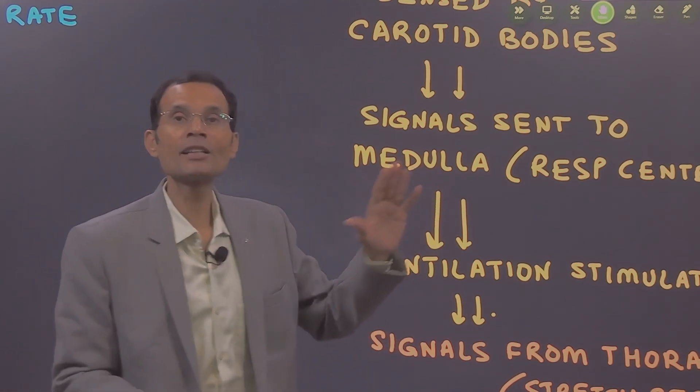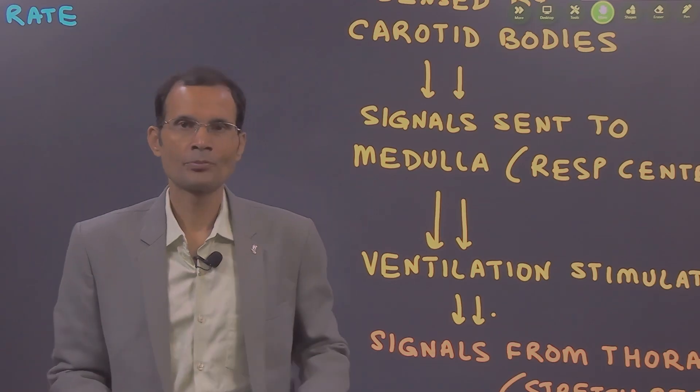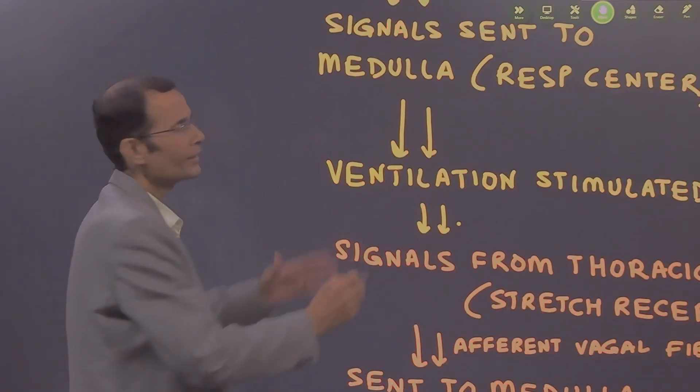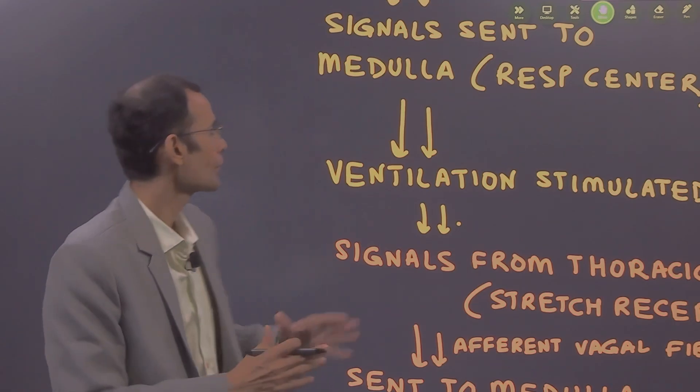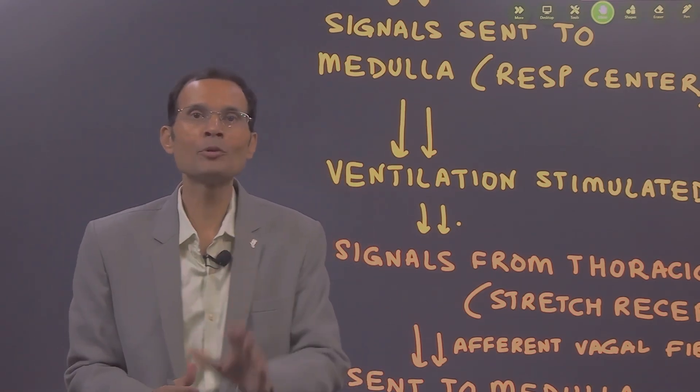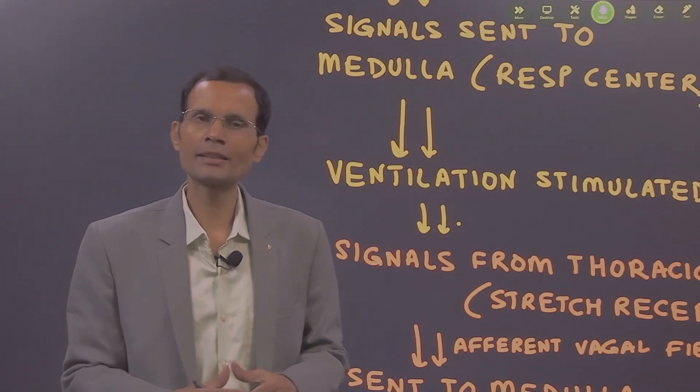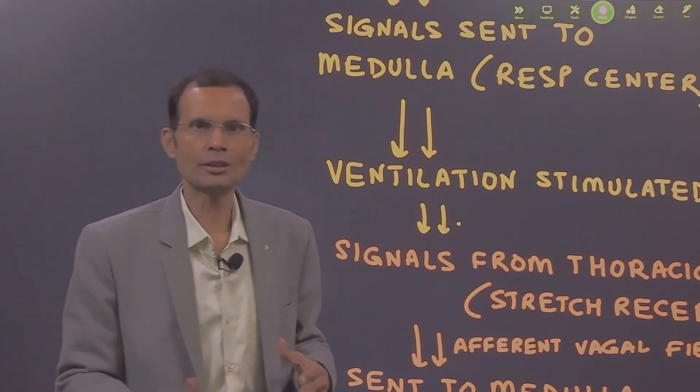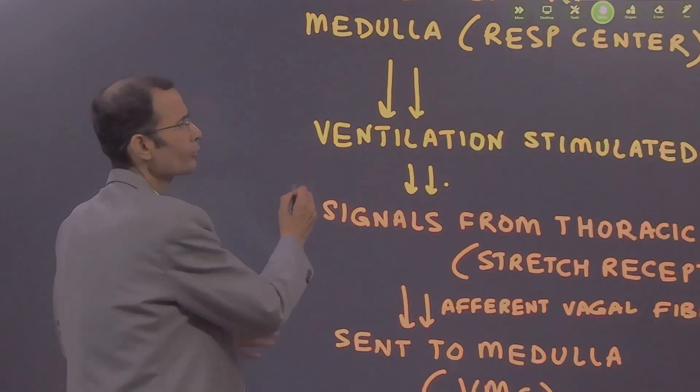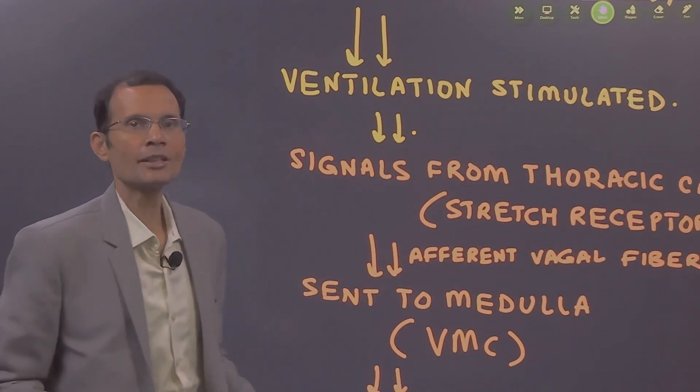The signals go to the respiratory center in the medulla, and this is the primary reflex where ventilation is stimulated. Obviously, there is hypoxia, so ventilation getting stimulated is quite logical. That's the mechanism for the primary reflex—ventilation is stimulated.